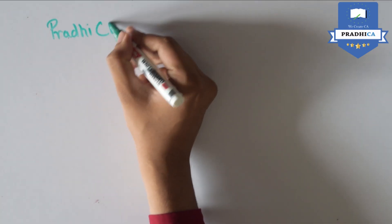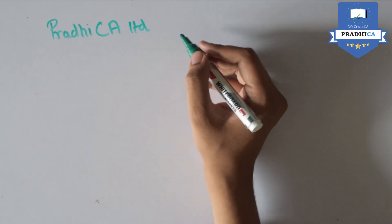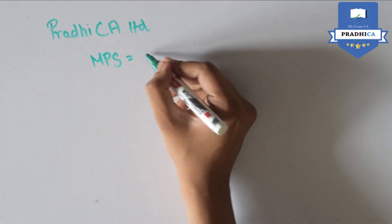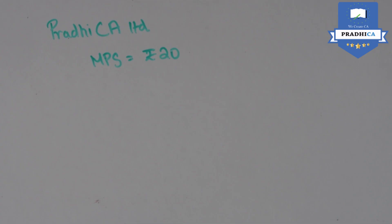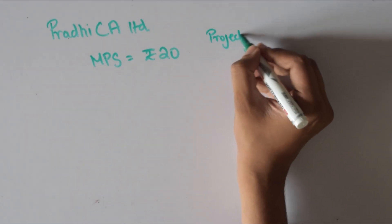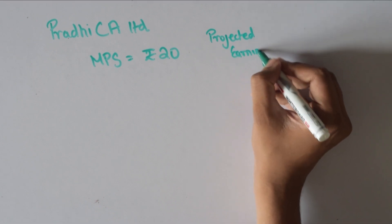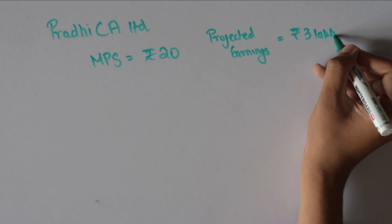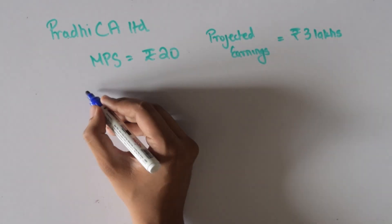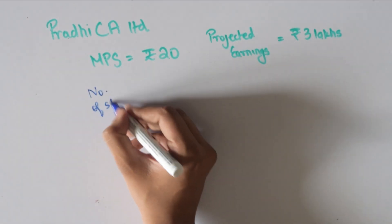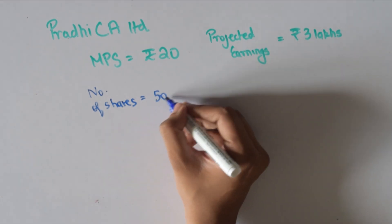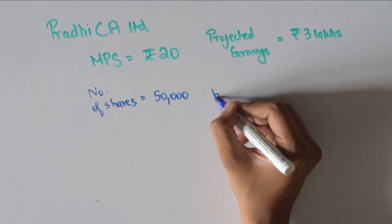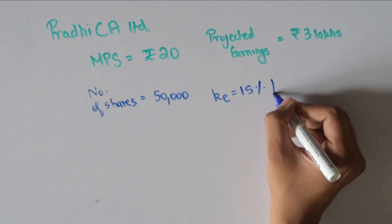Assume Pradhi CA Limited has shares trading in the market at a price of Rs 20. It has a projected earnings for the next year of Rs 3 lakhs. The number of shares trading in the market are 50,000 and the cost of equity of the company is 15%.